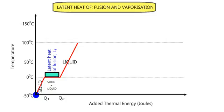So, in summary, the latent heat of fusion is the amount of thermal energy that we need to supply in order to change a solid into a liquid without changing its temperature.